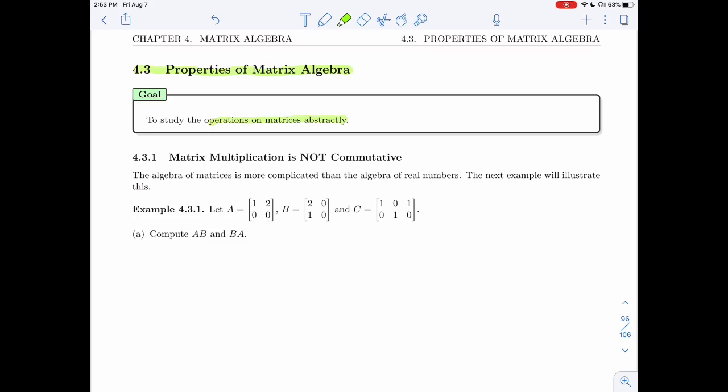First section is a bit of a downer. I find it cool, but maybe you'll think it's a downer. In section 4.3.1, we'll see that matrix multiplication is not commutative. This is something that we've come to expect because it's true of real numbers and it's true of the dot product.